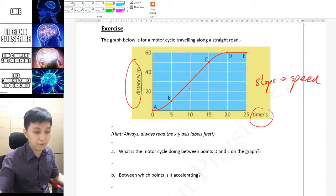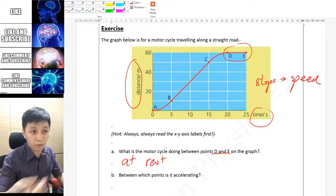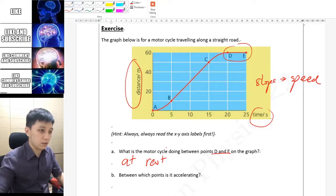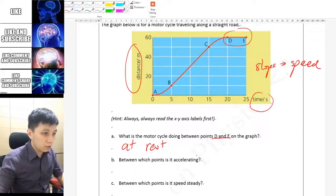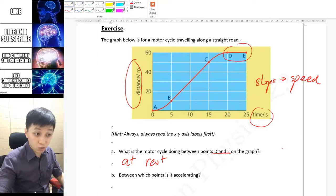Part A is asking you what happened between point D and E. It is simply at rest because it didn't move at all. I can say the speed is zero. Between which point is it accelerating? That means the speed would be increasing.